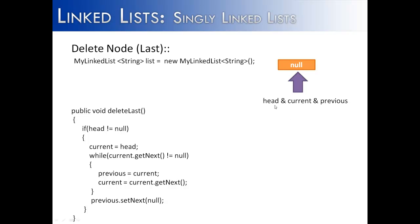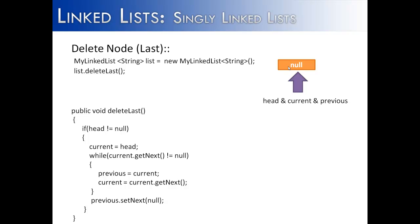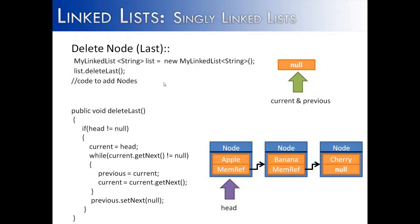Notice that our list is empty. Therefore, head, current, and previous are all assigned to null. We're going to try to make a call on an empty list and see what happens. We call list.deleteLast, and we'll see how the code handles that. It checks if head is not equal to null — well, head is equal to null, therefore it's an empty list, so the method stops right there.